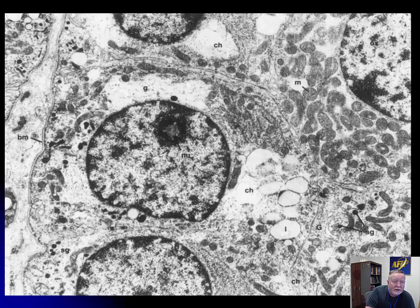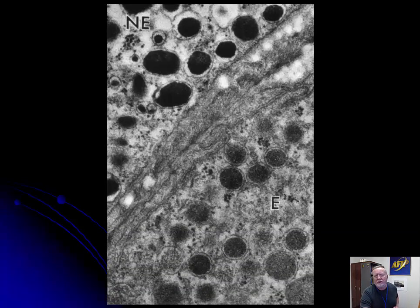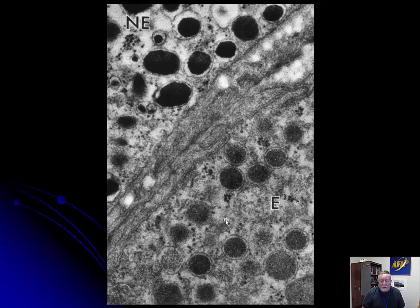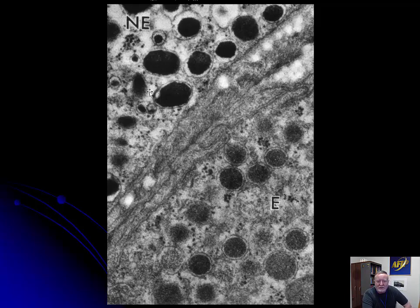While talking about secretory granules, we can look at the adrenal medulla, which also has dense core secretory granules just like we saw in the pancreatic islets. A piece of interesting trivia: there are two types of cells in the adrenal medulla that look identical under histology — those producing epinephrine and those producing norepinephrine. The epinephrine-producing cells have centrally placed dense core granules, while the norepinephrine-secreting cells have eccentric granules that are not centrally placed.